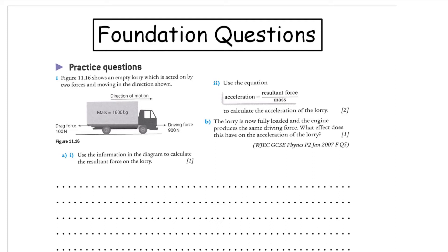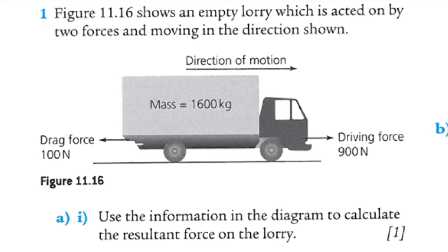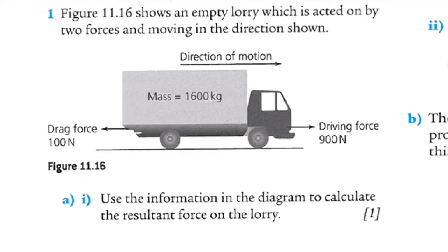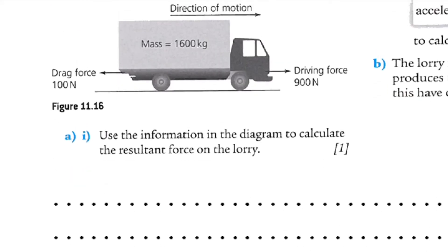Question one. Empty lorry acted on by two forces, moving in the direction shown. It's moving to the right. 900 newtons to the right, 100 to the left. And it's also giving us a mass. Use the information to calculate the resultant force. Well that's the first thing I do. Resultant force. To do that I'm going to take 100 newtons away from the 900 newtons.